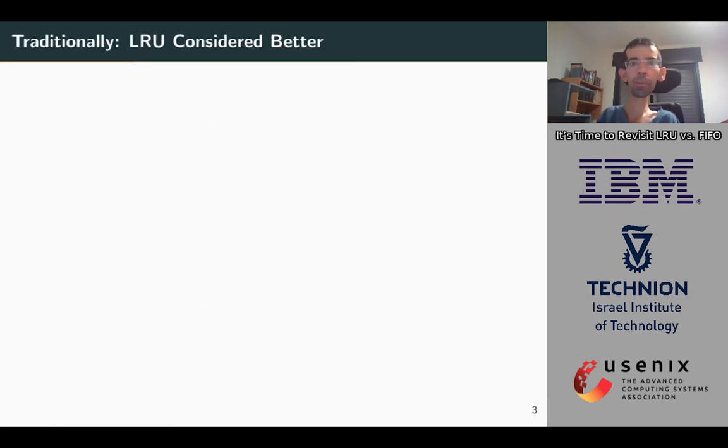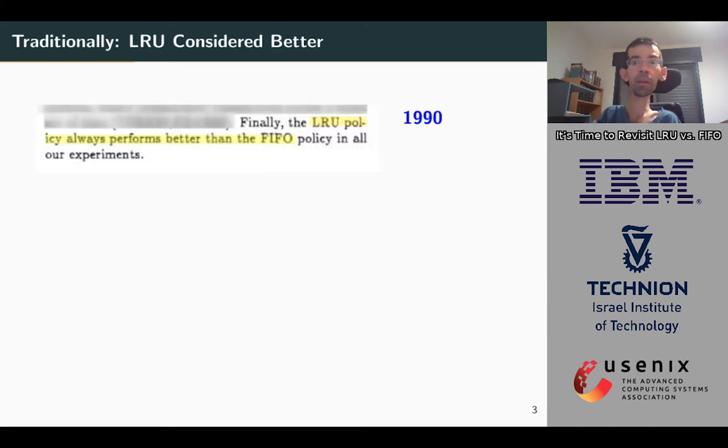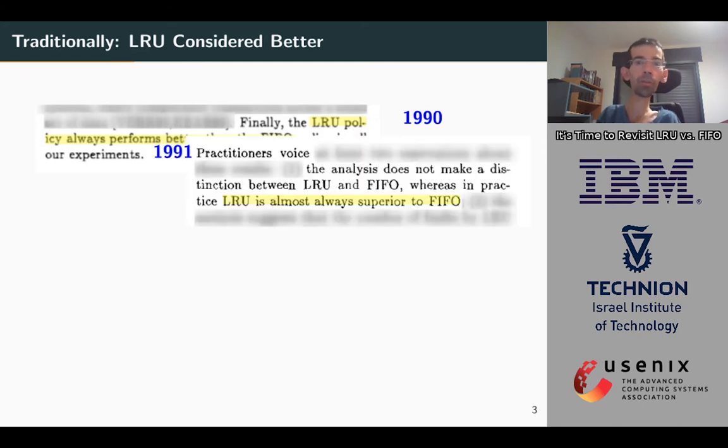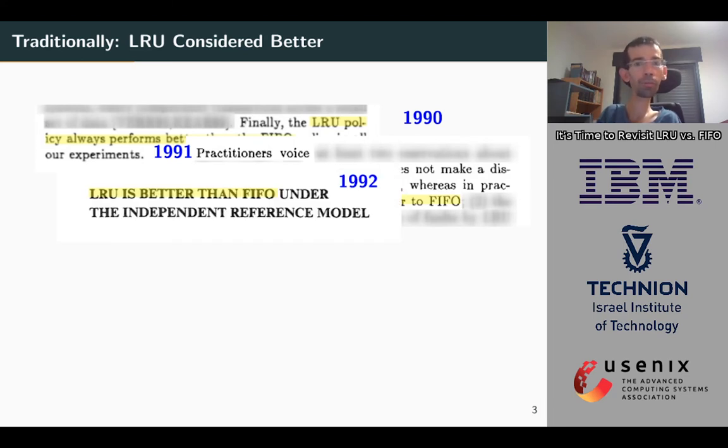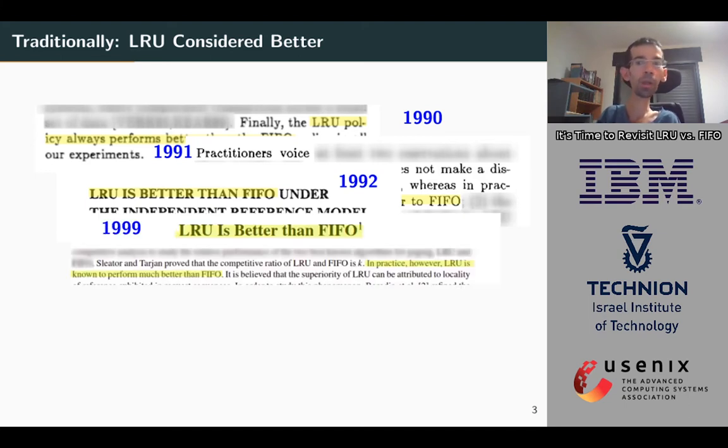During the years, LRU is considered better than FIFO, and we read a few papers from the 90s that say in a few ways, like LRU policy always performs better than FIFO, LRU is always superior to FIFO, the title LRU is better than FIFO, and some models LRU is better than FIFO in practice. The question we are asking is, does it still hold? Does LRU still outperform FIFO?